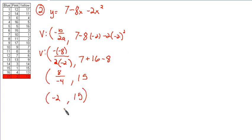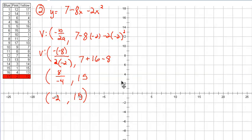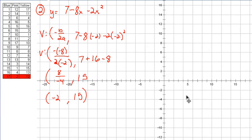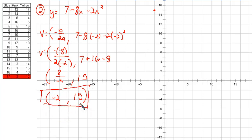So the vertex is at (-2, 15). It also asks which way does it open — that all has to do with a. A is the controlling factor: will it open up or down? It's negative, so it opens down. If we were to graph a couple of points, we would see it opens down and not up.